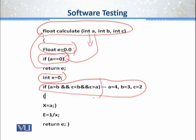Then we have a condition: if a is greater than b, and c is less than b, and c is greater than a, then assign x to a. Then x has to be divided — that is, 1 divided by x.